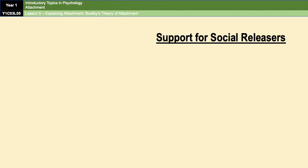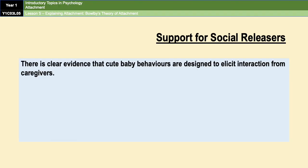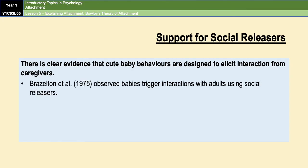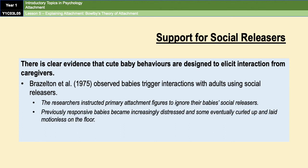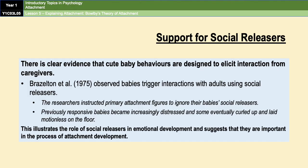As a final piece of research support, Brazelton et al. provided evidence that cute baby behaviours are designed to elicit interactions from caregivers. As part of their research, they observed babies triggering interactions with adults using social releasers, then instructed the primary attachment figure to ignore the baby's social releasers completely. They found that previously responsive babies became increasingly distressed, and some actually curled up and lay motionless on the floor. This illustrates the role of social releasers in emotional development and shows they are important in the process of attachment formation.